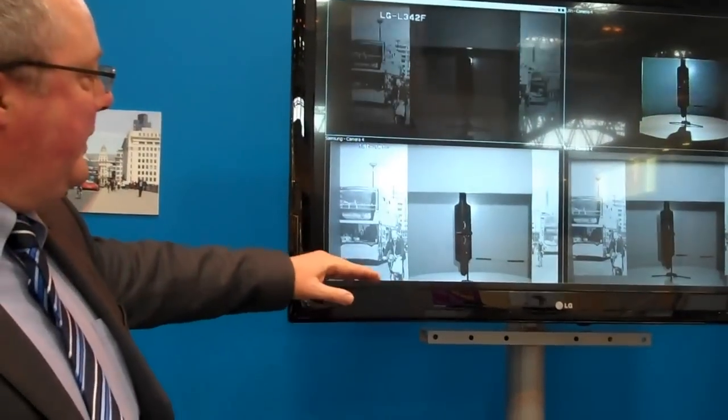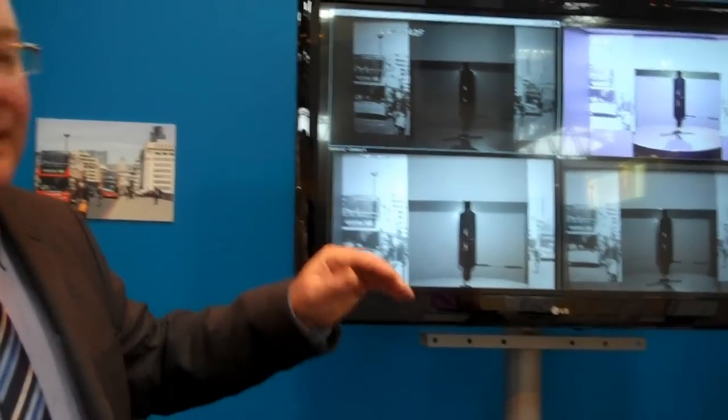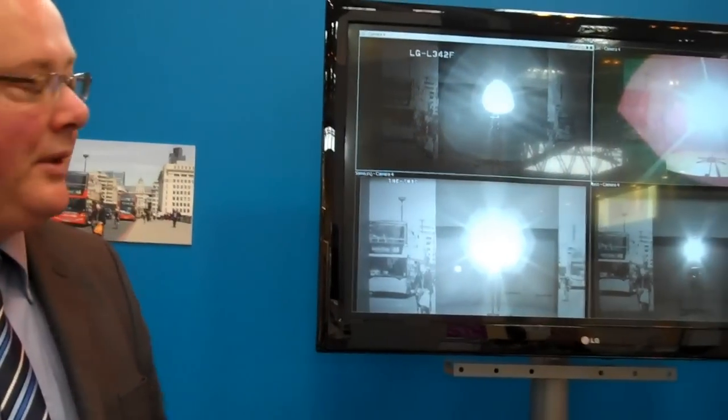In addition to that, the lighting levels are increasing and reducing over a cycle. So that again you can see the differences, how the cameras cope with the differences in lux levels.